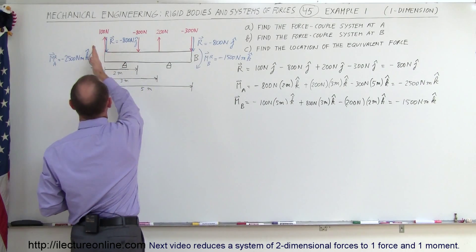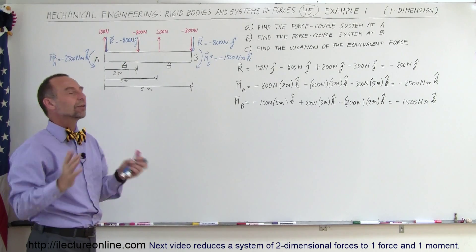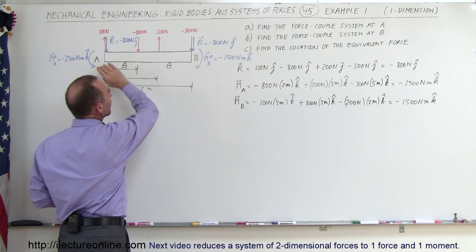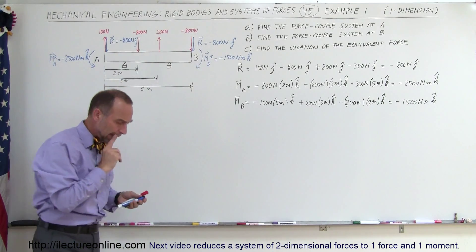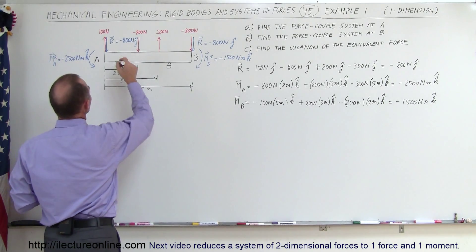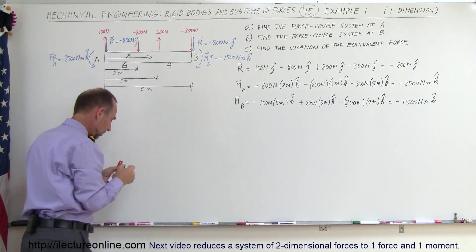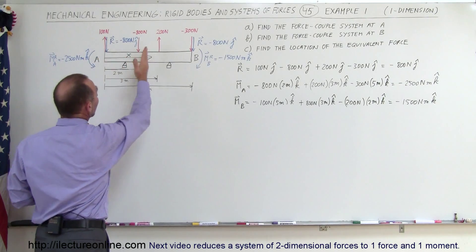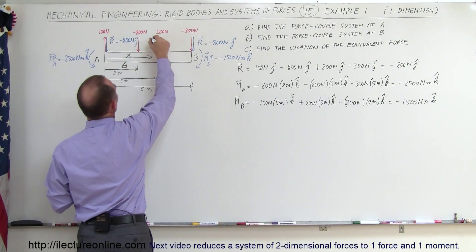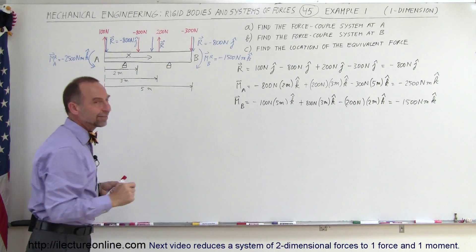Now, how do we find the equivalent single force and eliminate the couple altogether? We need to find a location where placing the resultant force cancels the moment. Working from reference point A, we place the force at some unknown distance x from A — we need to find what x equals.